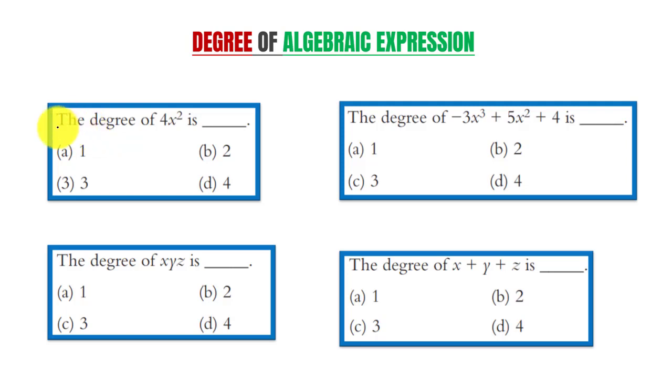First question is the degree of 4x² is. Since 4x² contains only one term and highest exponent of the variable is 2, hence degree of this expression, that is 4x², is equal to 2.